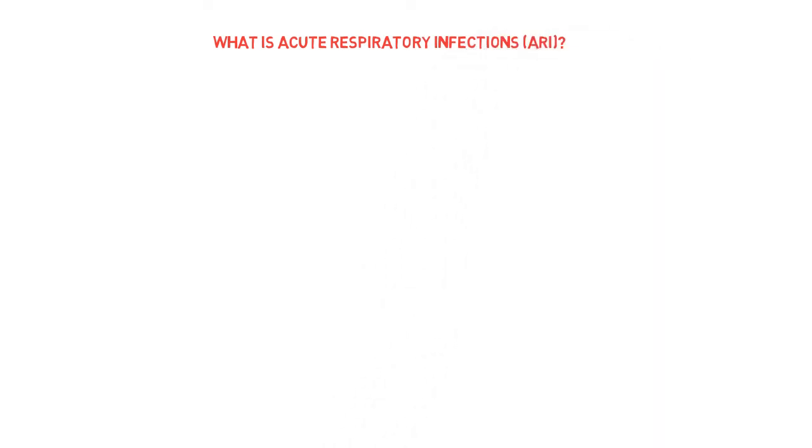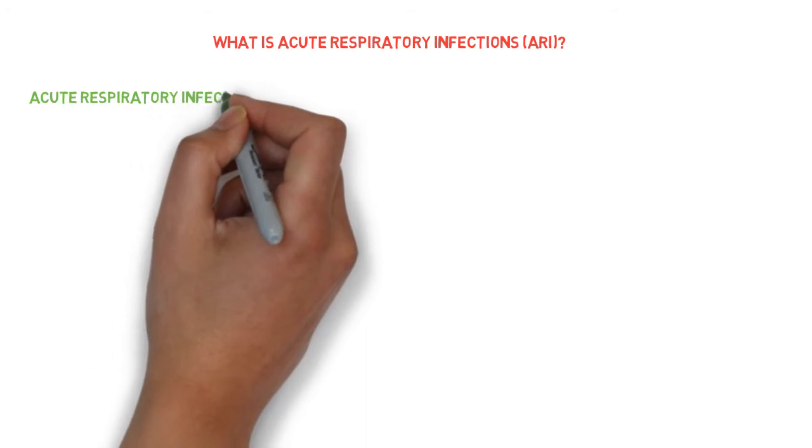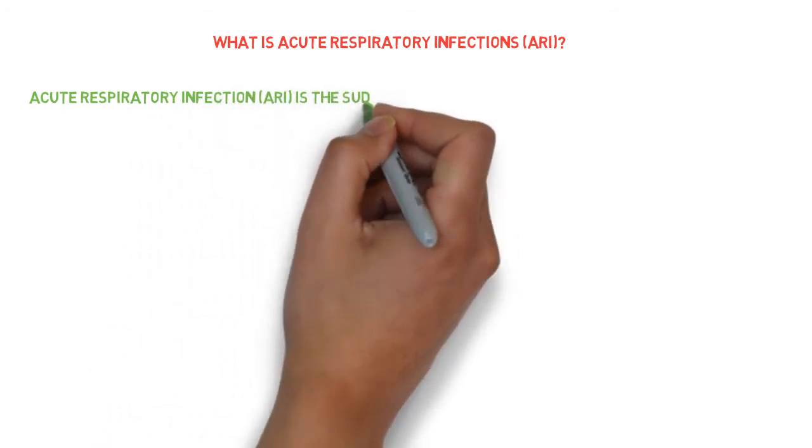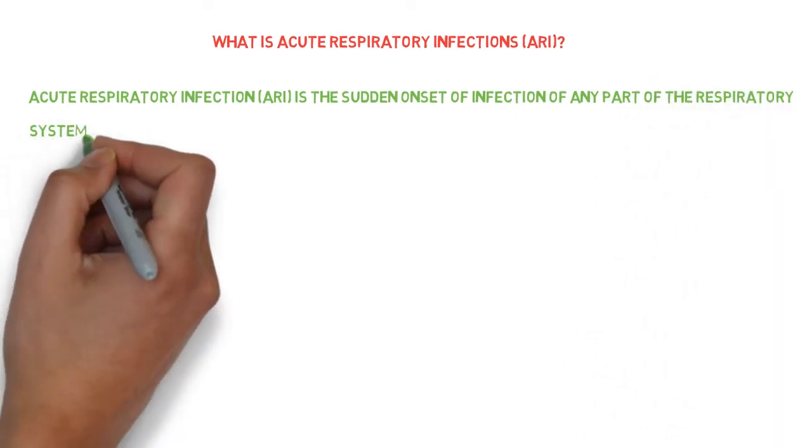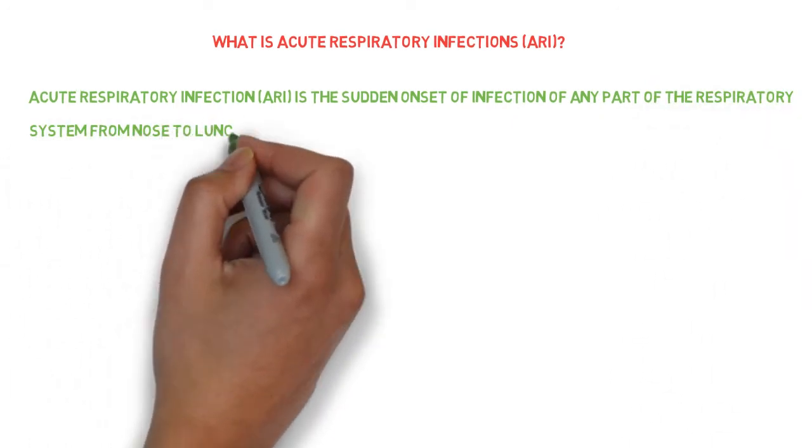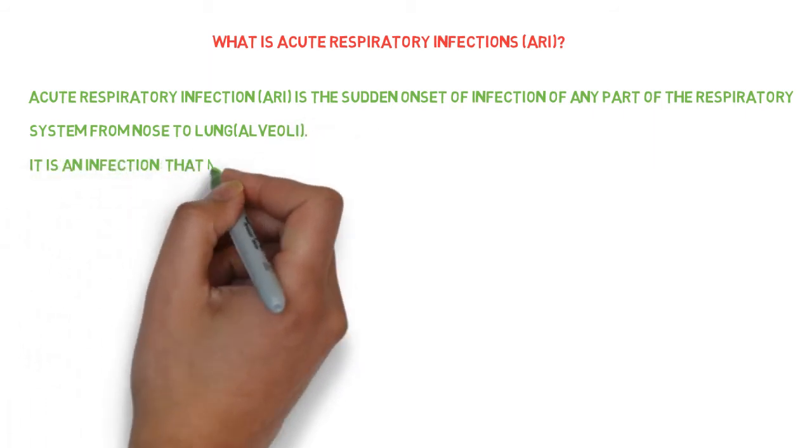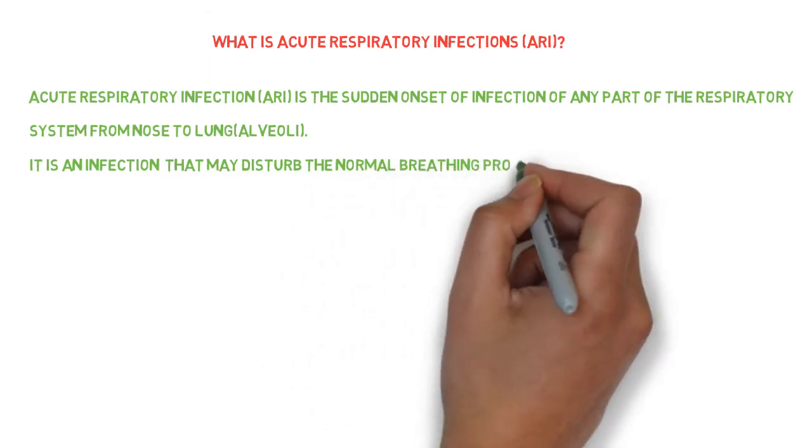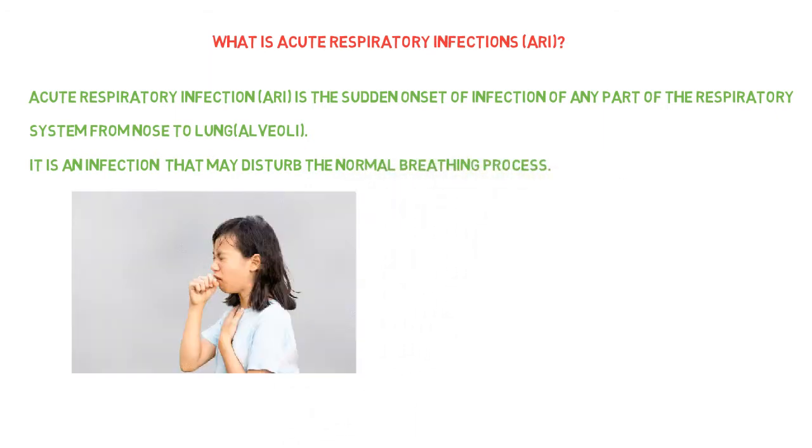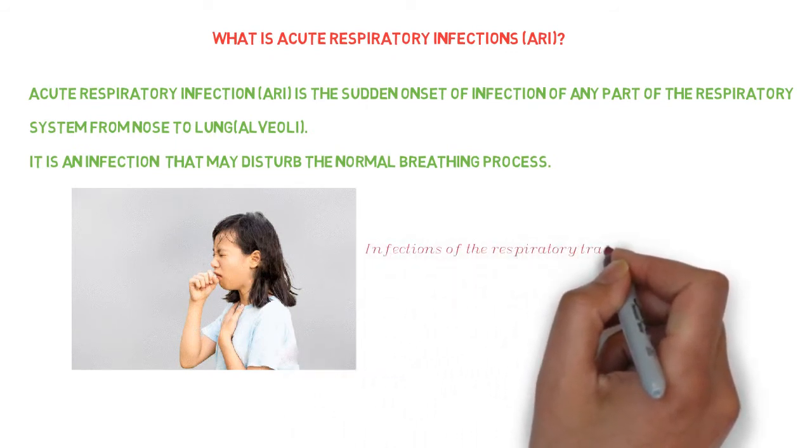Acute respiratory infection is the sudden onset of infection at any part of the respiratory system from nose to lung. It is an infection that may disturb the normal breathing process. Infections of the respiratory tract are the most common cause of death in young children and old persons.